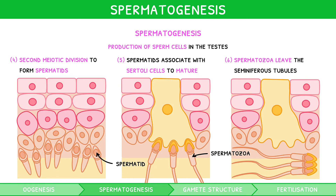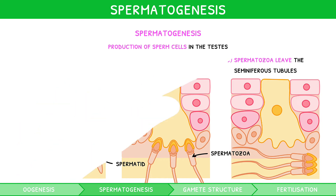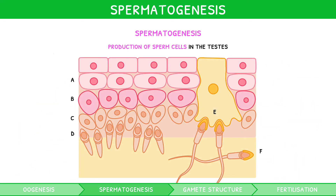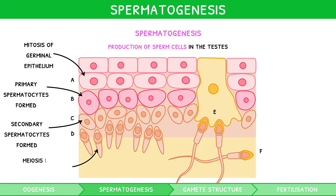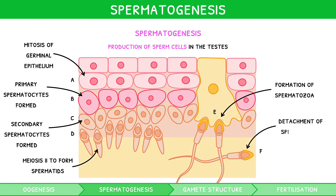Like oogenesis, you need to label these stages on a diagram. A represents the division of the germinal epithelium by mitosis. B represents the growth of diploid cells to form primary spermatocytes. C represents the first meiotic division to form secondary spermatocytes. D represents the second meiotic division to form spermatids. E represents the association of spermatids to Sertoli cells to form spermatozoa. And F represents the detachment of spermatozoa.